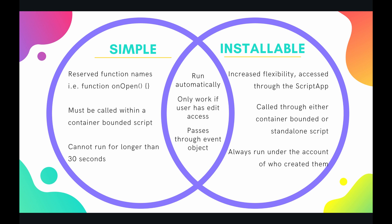Lastly, triggers pass through an event object. When a trigger fires — say an onOpen when somebody opens a spreadsheet — you will get something called an event object, which is data about that trigger firing. It could include who opened the file, or if it's a time-based trigger, when that trigger actually fired. You can choose to include it in your list of arguments or not. We're going to cover this a lot in later videos, so don't worry if you don't understand it now.